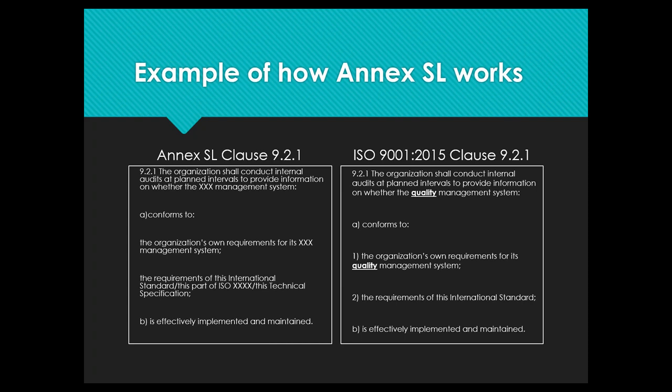Here's an example of how Annex SL works. On the left, an extract from Annex SL clause 9.2.1 states the organization needs to conduct internal audits at planned intervals to provide information on whether the 'XXX management system' conforms — the X's being a placeholder for the standard type. On the right, the same clause from ISO 9001 reads identically, but with the word 'quality' in place of the X's. The rest of the text is almost exactly the same — a direct correlation.